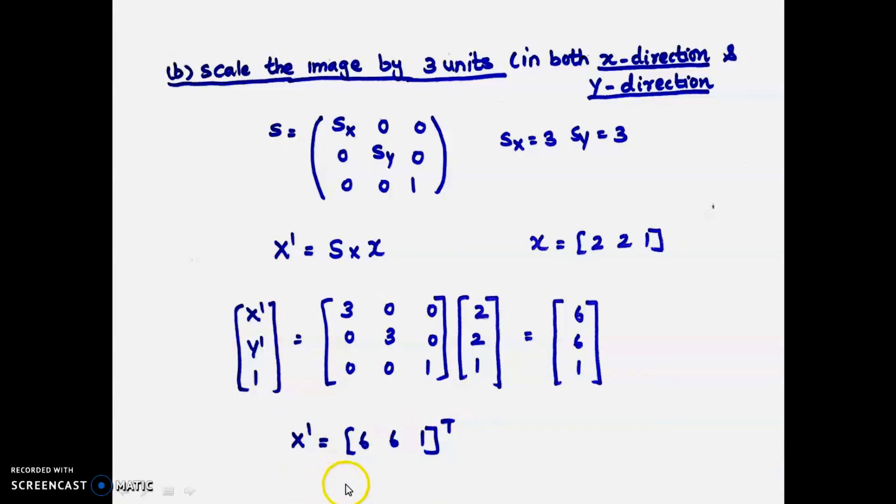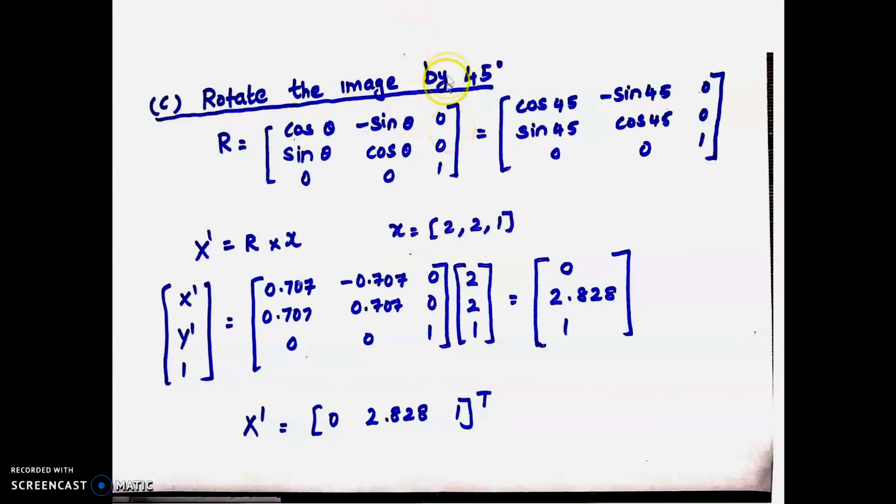Rotate the image by 45 degrees. R = [cos θ, -sin θ, 0; sin θ, cos θ, 0; 0, 0, 1]. This is the rotational matrix. You have to remember this matrix for scaling, translation, and rotation to do the problem in exams. Here 45 degrees is given, so substitute θ = 45 wherever theta appears.